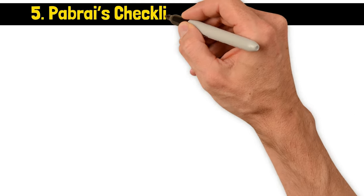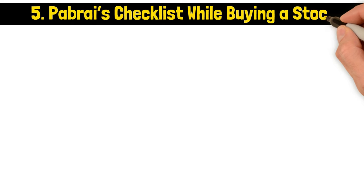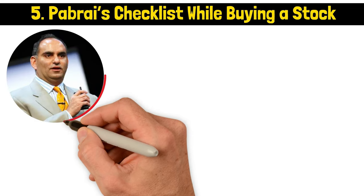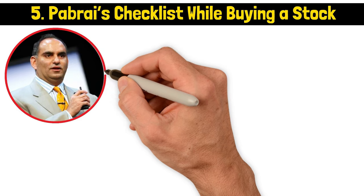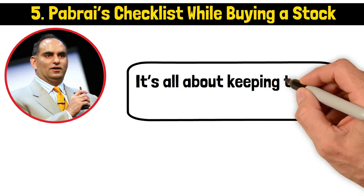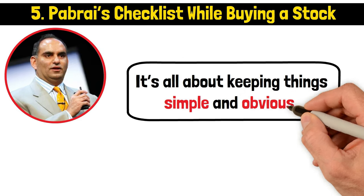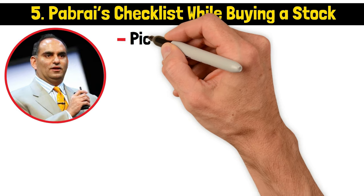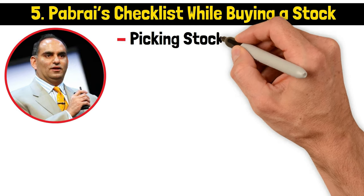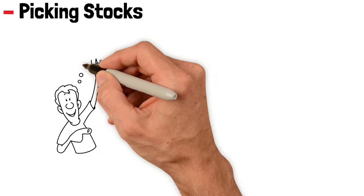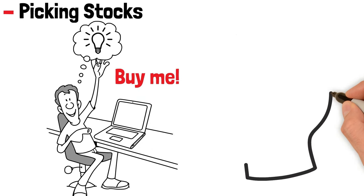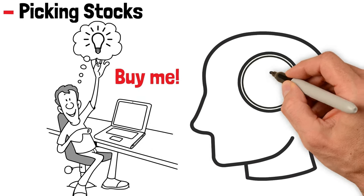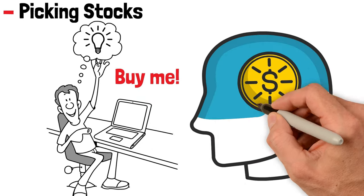Five, Pabrai's checklist while buying a stock. So Pabrai discussed what one should consider while choosing a stock to buy. Spoiler alert, it's all about keeping things simple and obvious. First off, Pabrai has a pretty unique approach to picking stocks. He needs the idea to practically scream at him, BUY ME! That's how clear and obvious the stock's potential should be to Pabrai. Until he feels that strong, he won't even consider it.